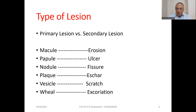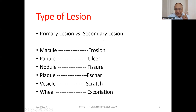In the primary lesion, we have: macule, papule, nodule, plaque, vesicle, and wheal — these are the types of primary lesion. In secondary lesions, it can be erosion, ulcer, fissure, eschar, scratch, and excoriation. All these are types of the secondary lesion, and all these are connected terms with skin pathology or skin problems.